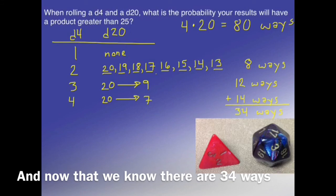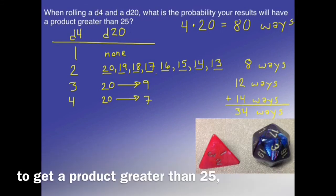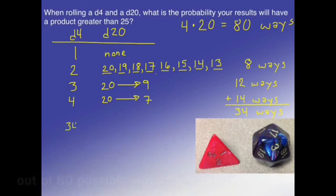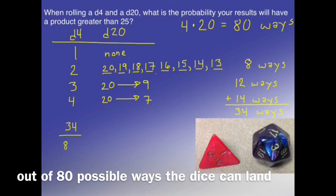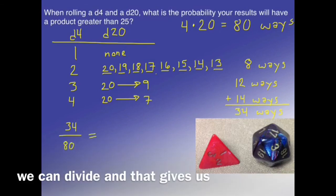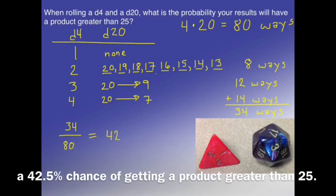So now that we know that there are 34 ways to get a product greater than 25, out of 80 possible ways the dice can land, we can divide, and that gives us 42.5% chance of getting a product greater than 25.